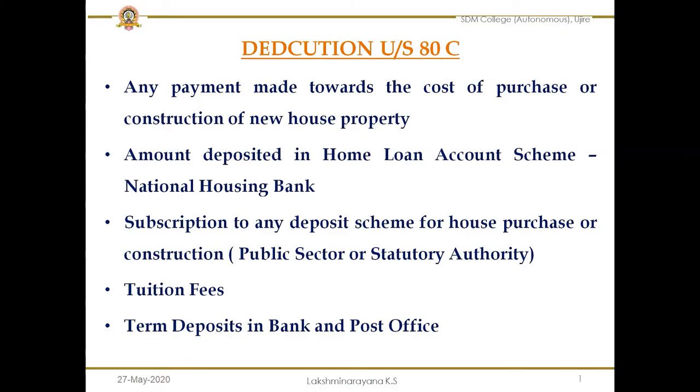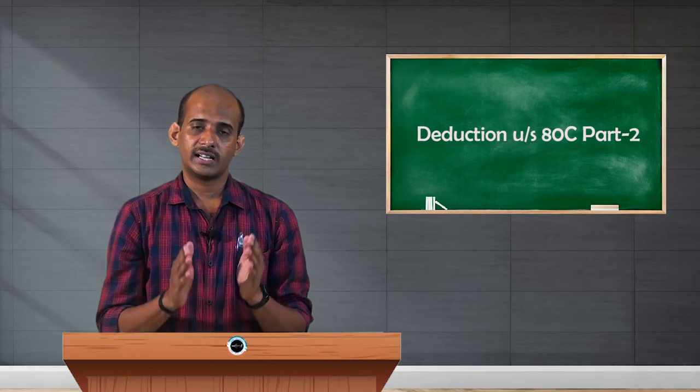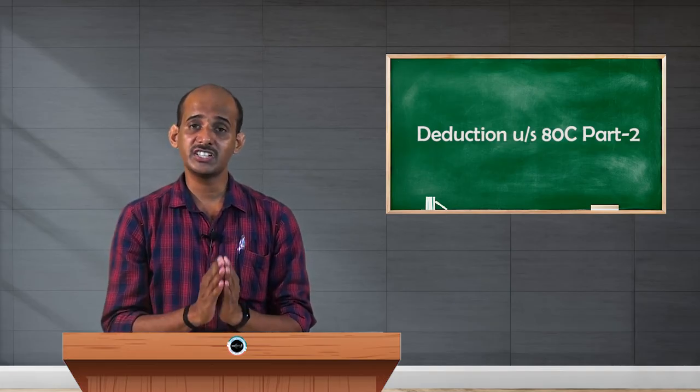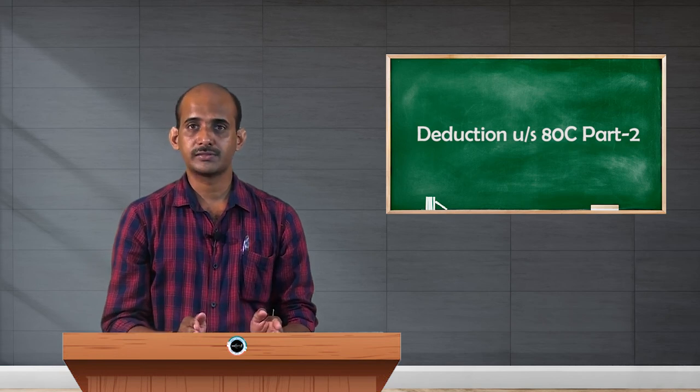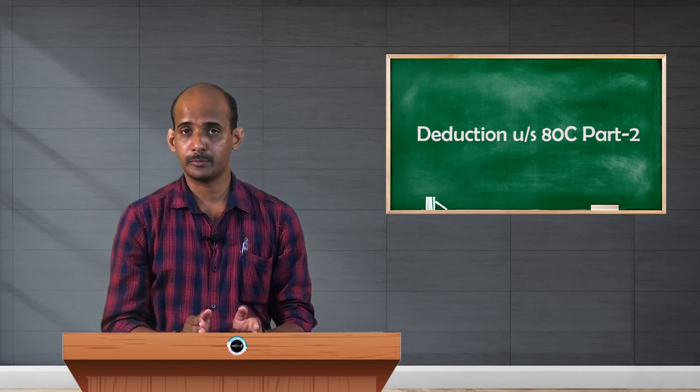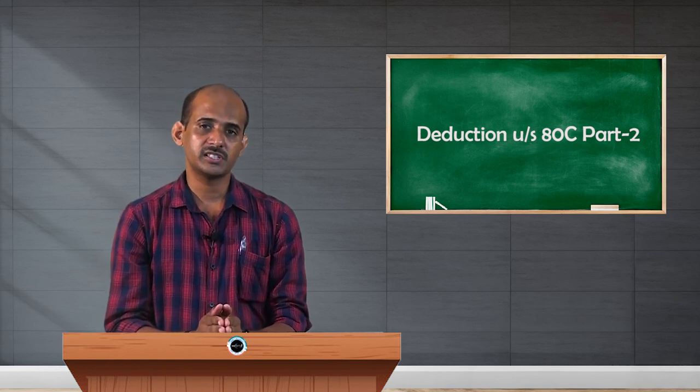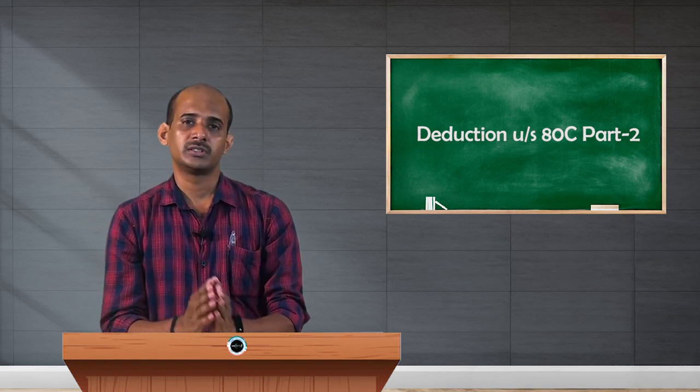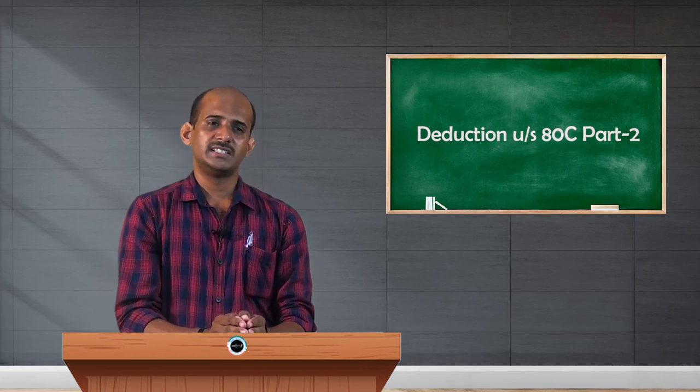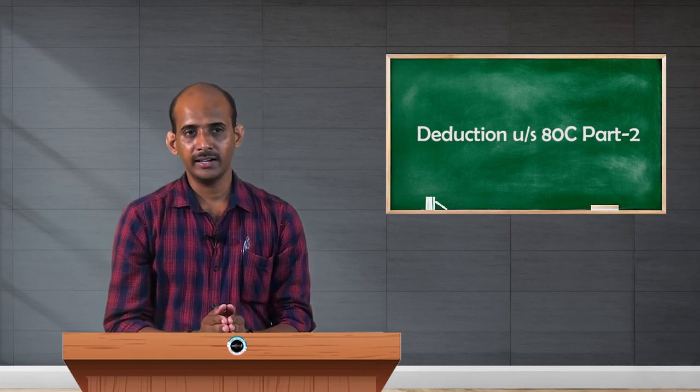And the last one is term deposits in bank and post office. Normally as part of our savings plan, people will invest their money in term deposits, nothing but fixed deposits. It may be in bank or it may be in post office. Such term deposits are also eligible for deductions under Section 80C, but the condition is that those term deposits must be for at least five years. More than five years you can take. Any deposit which is kept for five years or more is eligible for deduction. This is about term deposits in bank and post offices.